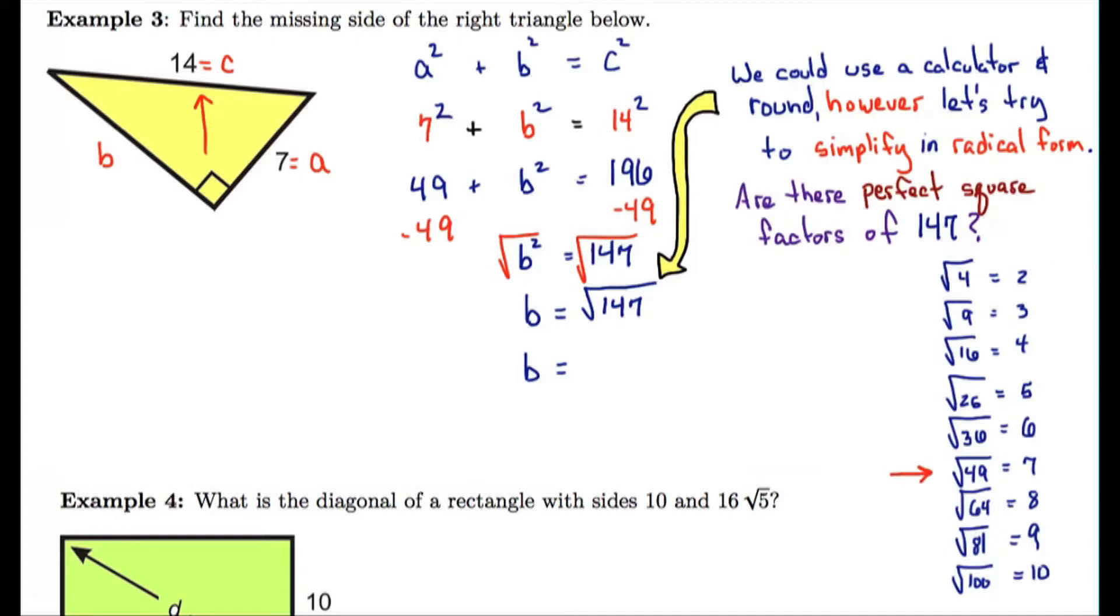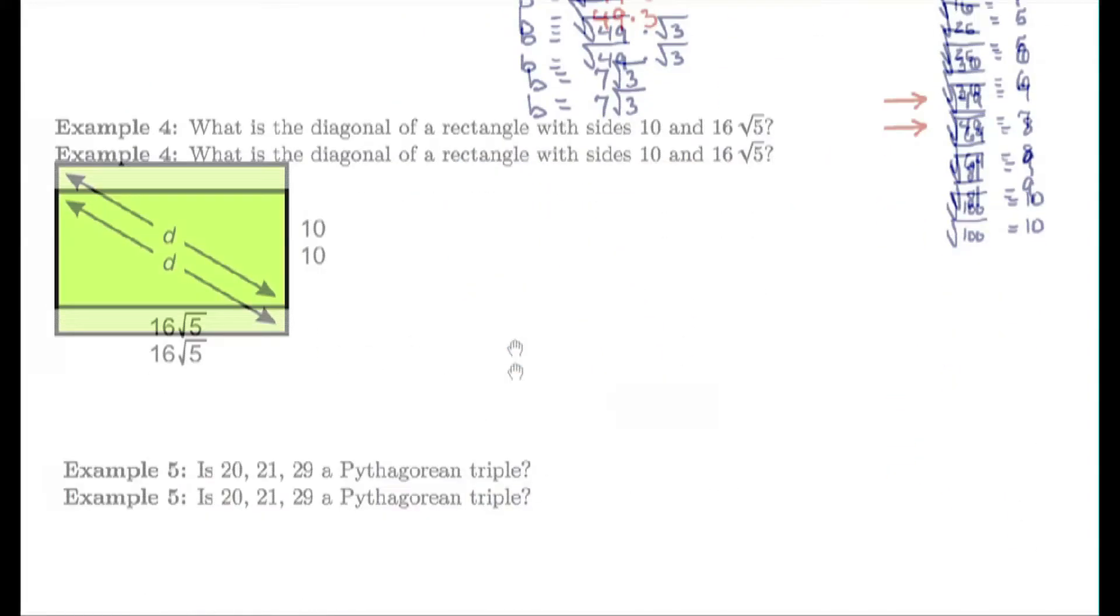Well, 49 is a factor of 147. In fact, 49 times 3 is 147. And then I can rewrite this as the square root of 49 times the square root of 3. And what is the square root of 49? 7. So our solution is 7 root 3. And that's how we do it in simplest radical form.